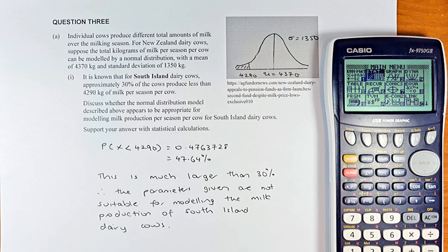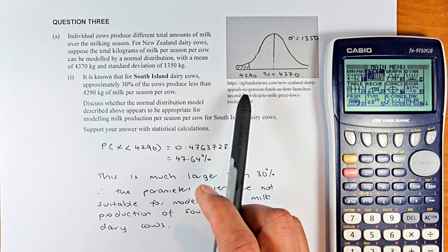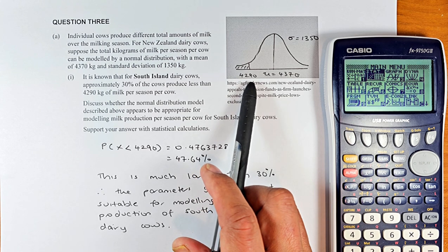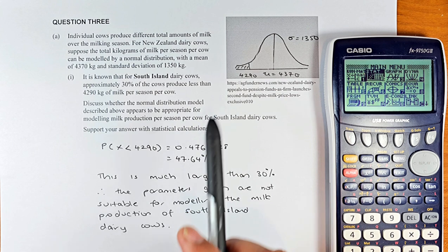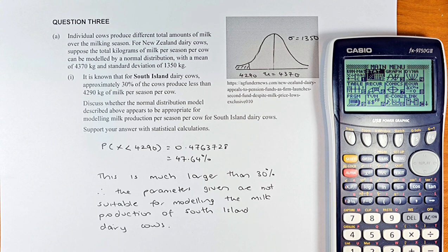So it is known that South Island dairy cows, approximately 30% of the cows produce less than 4,290 kg of milk per season. So 4,290 kg is there, less than 4,290 is the area on the left. So we know that this area is going to be 30% but now we are going to compare whether it is 30% or more or less.